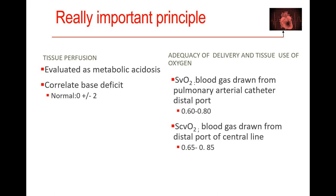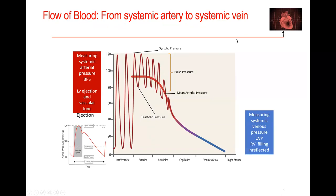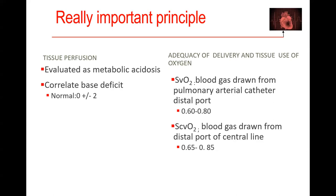SCVO2 is the blood gas drawn from the distal tip of your central line and should always be somewhere around 65 to 85% saturated. If the blood went out at 100% saturation and came back at 65%, it means the patient has used 35% of the available oxygen because the tissues needed it.